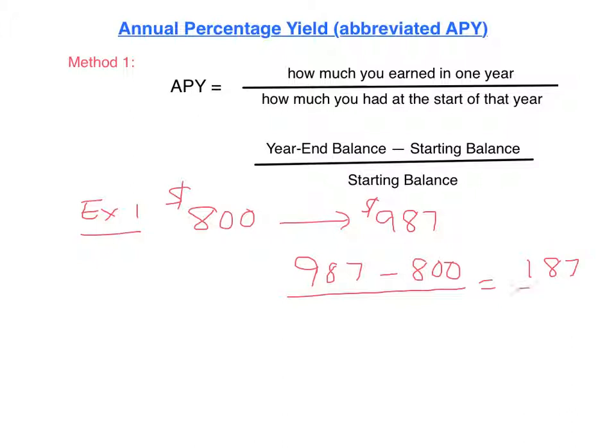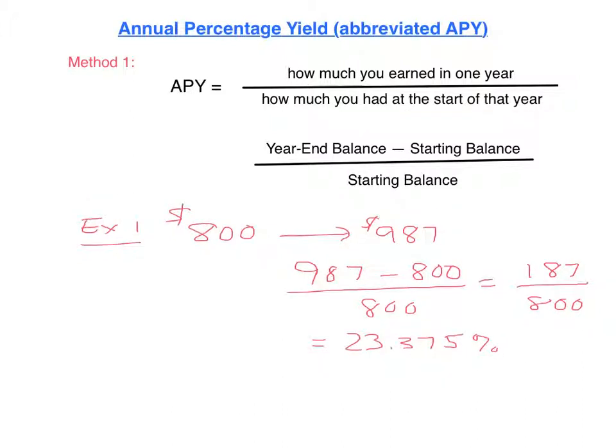And now to find out what percent that was of the original amount I had, I have to divide by the beginning amount. So when I divide by $800, I end up getting 23.375%. So basically what I was doing is finding out what percent my earnings were of my original amount.